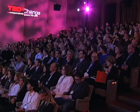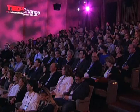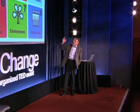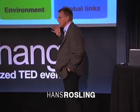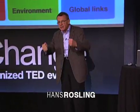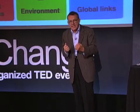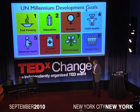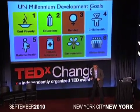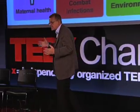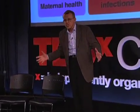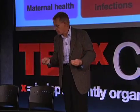We are here today because the United Nations have defined goals for the progress of countries. They are called Millennium Development Goals. The reason I really like these goals is that there are eight of them. By specifying eight different goals, the United Nations have said that there are so many things needed to change in a country in order to get a good life for people.